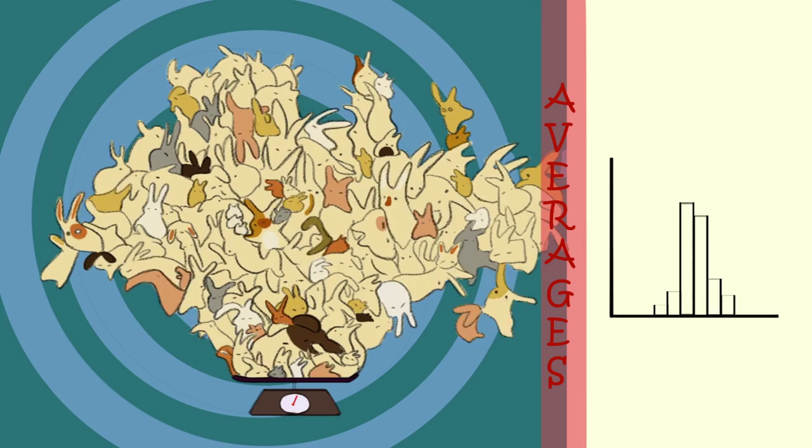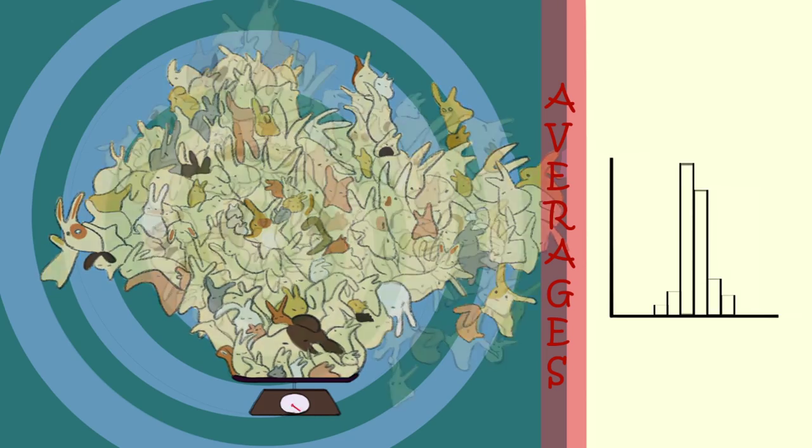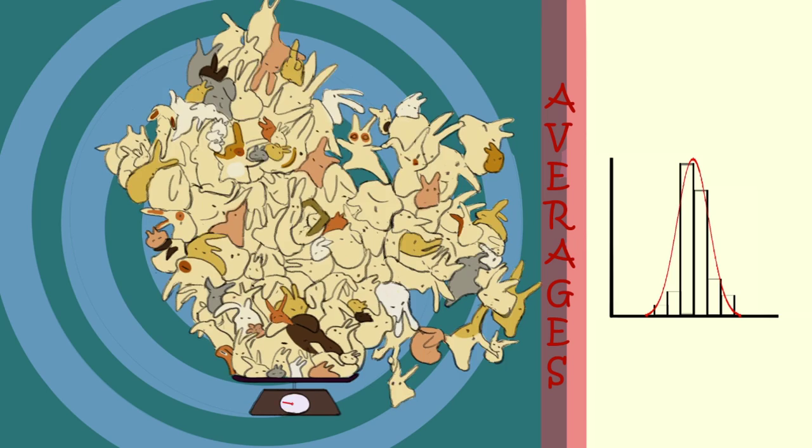Surprisingly, as the sample size increases, the spread decreases. The distribution of average weights becomes more and more normal.